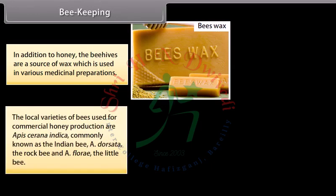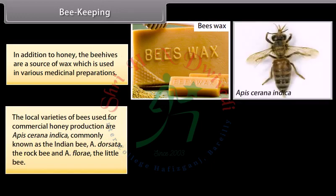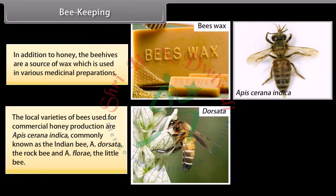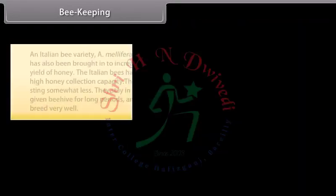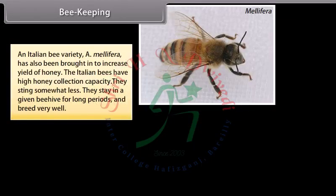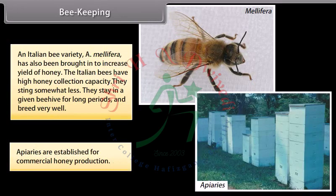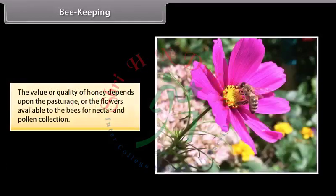The local varieties of bees used for commercial honey production are Apis cerana indica, commonly known as the Indian bee, A. dorsata the rock bee, and A. florea the little bee. An Italian bee variety, A. mellifera, has also been introduced to increase yield of honey. The Italian bees have high honey collection capacity, stay in a given beehive for long periods, and breed very well. Apiaries are established for commercial honey production. The quality of honey depends on the pasturage, or the flowers available to the bees for nectar and pollen collection.